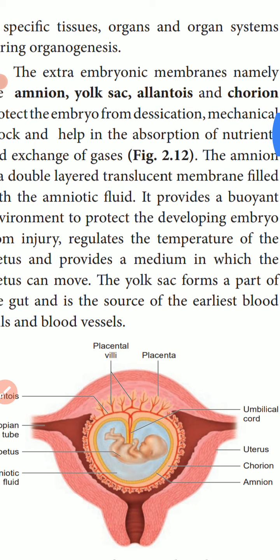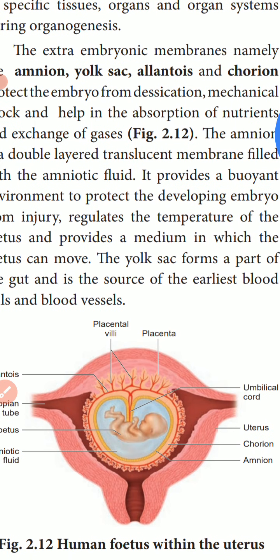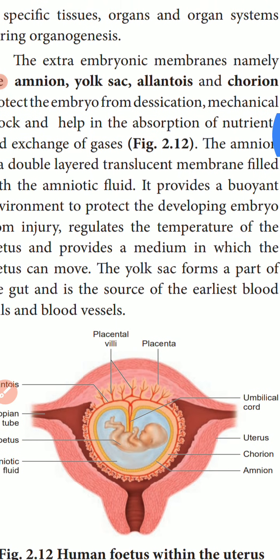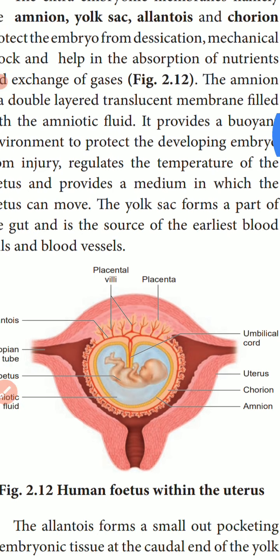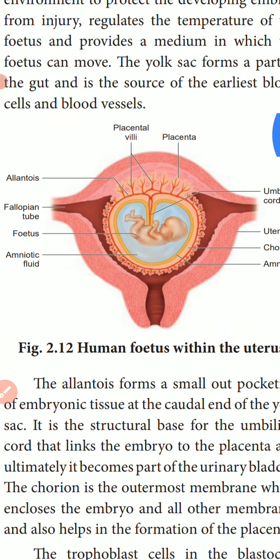The next membrane is the Yolk sac. The yolk sac forms a part of the gut and is the source of the earliest blood cells and blood vessels. That is the function of the yolk sac.